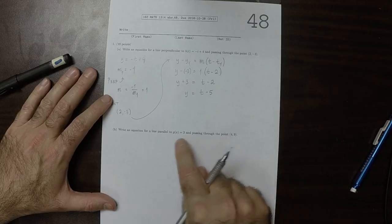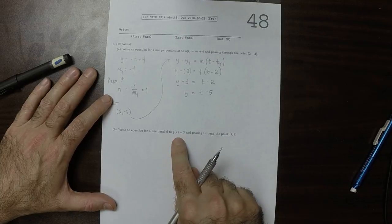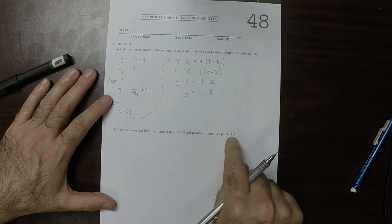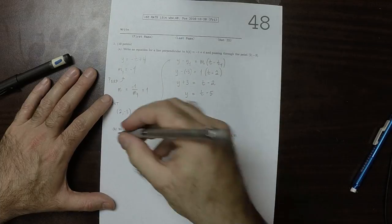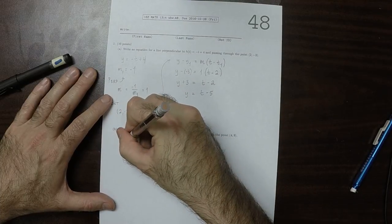So if it's parallel to a horizontal line, a parallel line to this must also be horizontal. And if it's passing through that point, the answer is just, quite simply, y is 9.